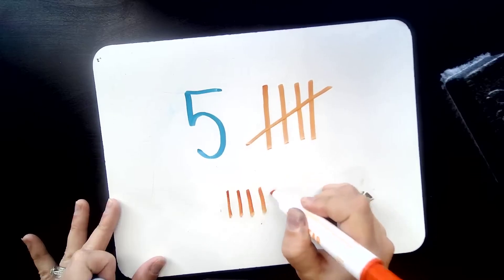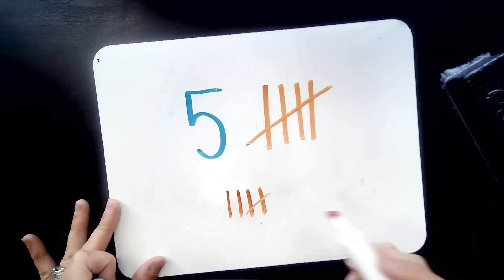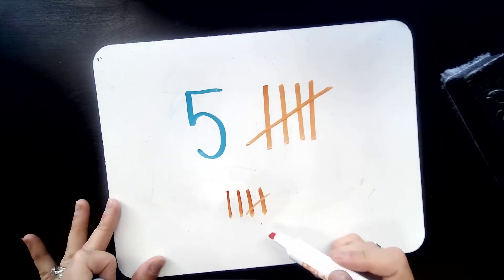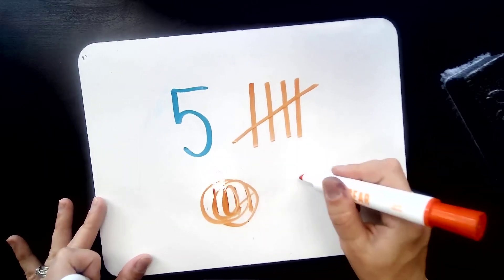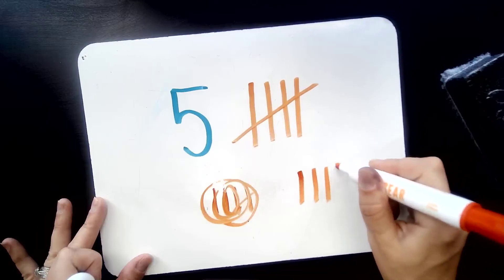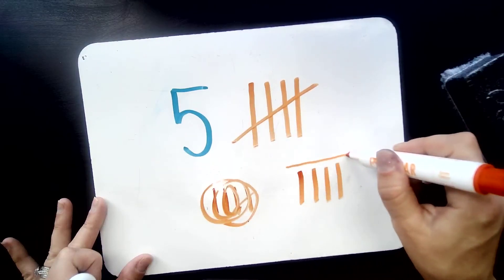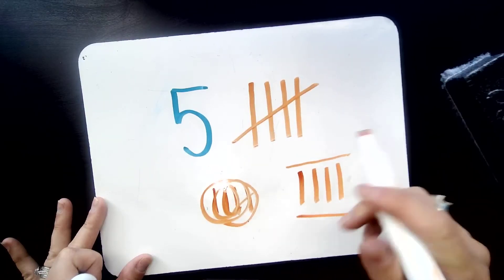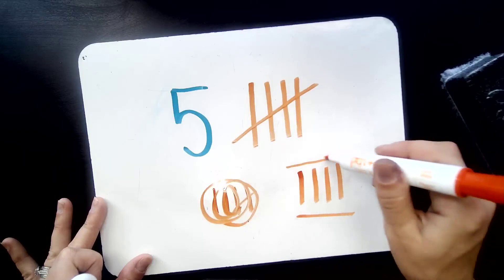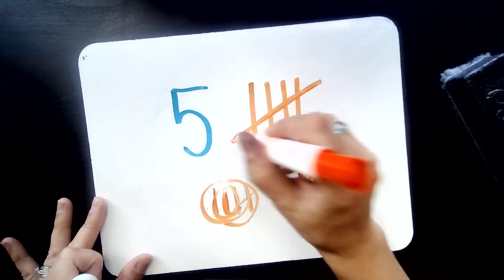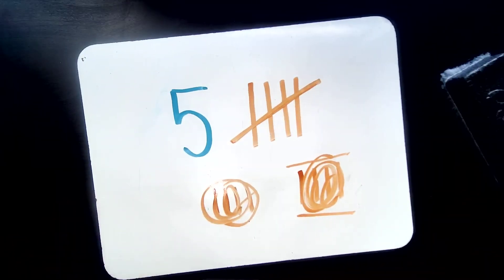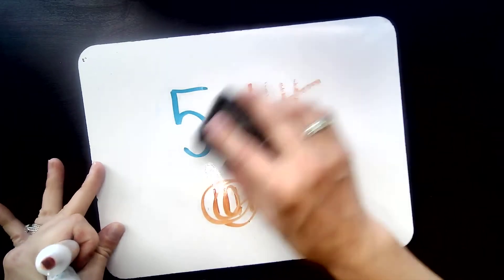So like this, you don't want it just to do that. That doesn't connect all the tallies. So we can't tell that those are working together. Okay. Also, you don't want to do it above or below. Again, we can't tell that those are grouping those tallies together. So you want to make sure that it goes across all four of your tallies to make that group of five.